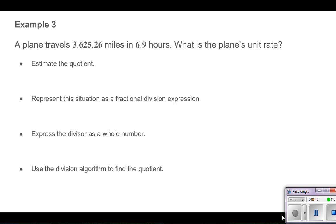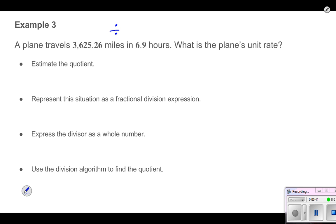Before we get started, the best thing to do is a quick estimate to make sure that when we're finished with our division, we're in the right ballpark. We've got a plane travels 3,625.26 miles in 6.9 hours. What is the plane's unit rate? I know I'm going to be dividing by 6.9, so if I'm estimating, I know that's very close to 7.